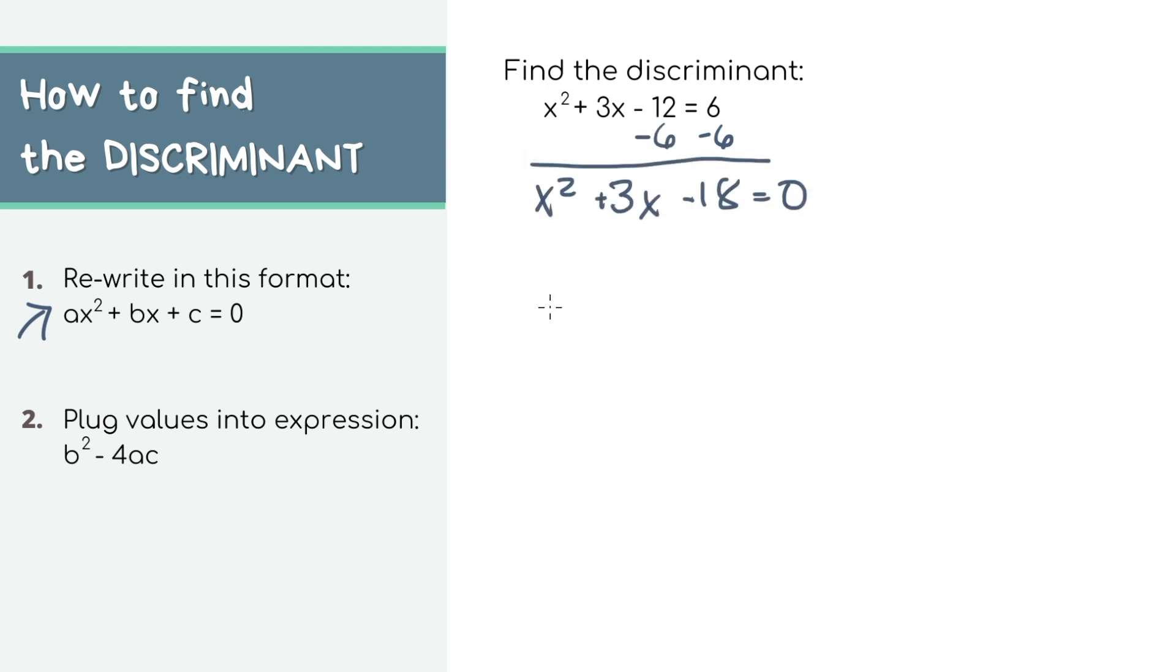Now all we need to do is find the discriminant by plugging in the a, b, and c values into this expression here. If you're familiar with the quadratic formula, it's just the same thing as the stuff inside the square root.